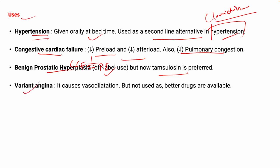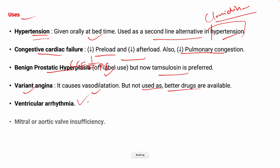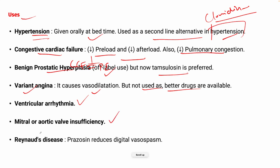In variant angina (chest pain), prazosin is used because it causes vasodilation, though it is no longer preferred as better drugs are available. It is used in ventricular arrhythmias, mitral or aortic valvular insufficiency, and in Raynaud's disease — a condition where parts of the body feel abnormally cold — because prazosin reduces digital vasospasm.